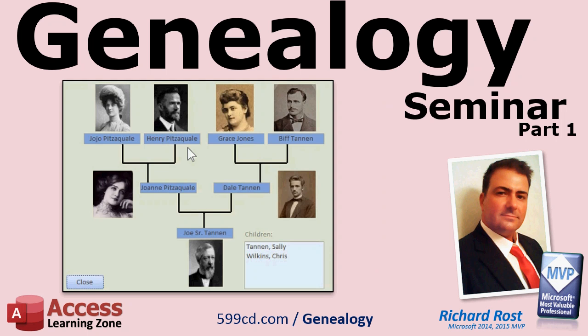You will learn a quick way to store profile pictures in your database, and then you will learn a better way to have Access store them in an external folder customized for each person. We will build a graphical family tree that you can use to quickly move up through your ancestors and down through your descendants. Click on someone and the tree reorganizes around that person — a great way to navigate through your family graphically.